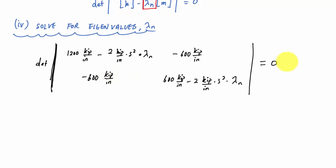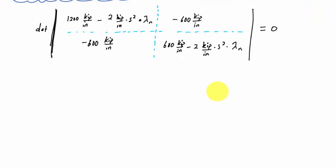I'm going to take the determinant of this 2 by 2 matrix. This is with k minus lambda n times m already done. You might recall that the determinant of a 2 by 2 matrix with entries a, b, c, d is a*d minus b*c, so we're just going to go ahead and do that.